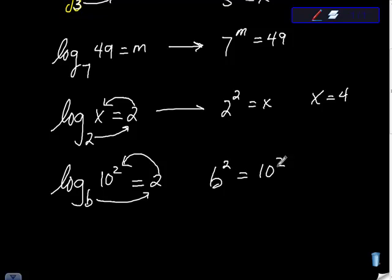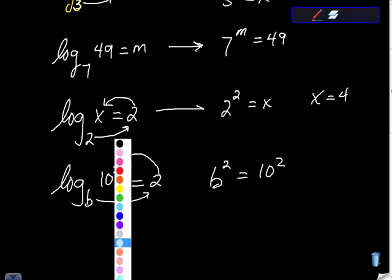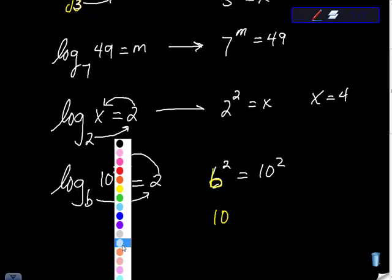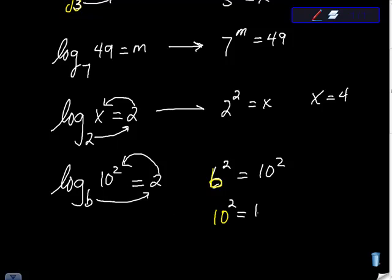So we end up with b squared is equal to 10 squared. Well, what's missing in this picture? We have squared here, squared here. We have 10 here and a variable here. So what number would make them the same? So I'm looking for the replacement value for b. I say, well, if b was 10, then we would have 10 squared equals 10 squared, question mark. And therefore, b is equal to 10.